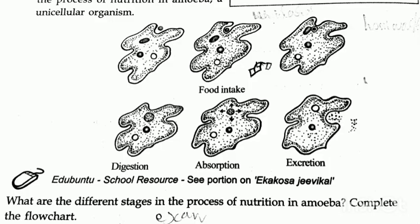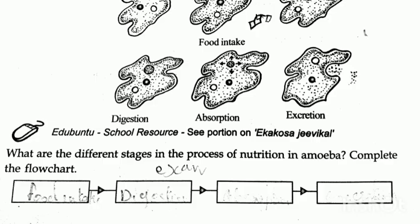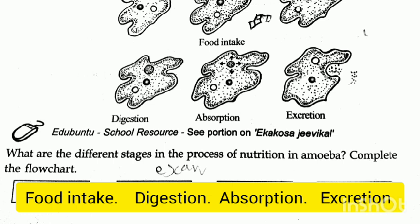Amoeba nutrition is important. What are the different stages in the process of nutrition in amoeba? The stages are: food intake, digestion, absorption, and excretion — abbreviated as FDAE.